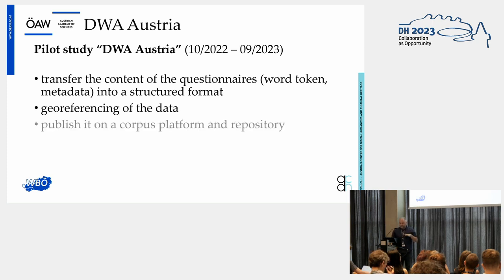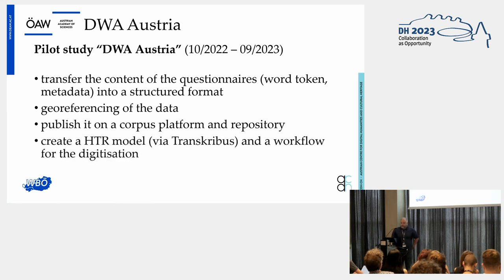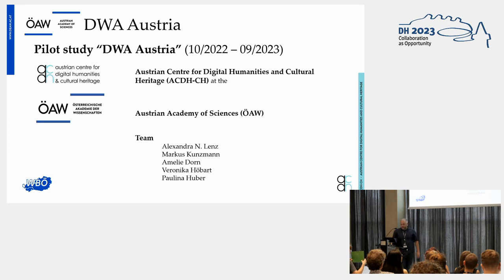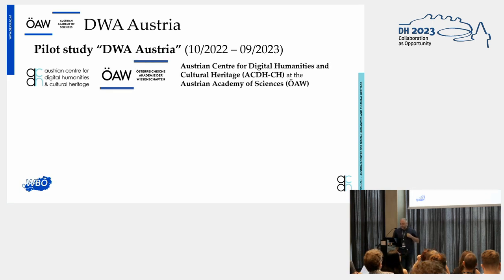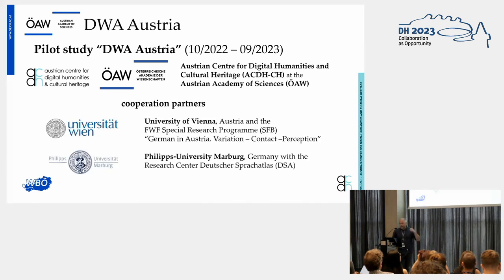The questionnaires are archived in Marburg at the Center for Deutsche Sprachatlas — the German Language Atlas. Our pilot study started in October last year and ends in September this year. What we want to do is transfer the content of the questionnaires into a structured format — that means word tokens and metadata. We want to georeference the data, publish it on a corpus platform, put it into a repository, and create an HTR model using Transkribus. The team is from the Austrian Center of Digital Humanities at the Austrian Academy of Sciences, with cooperation partners at the University of Vienna and Philipps University Marburg, who support us with scans.